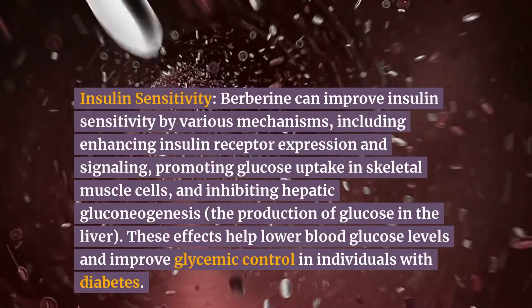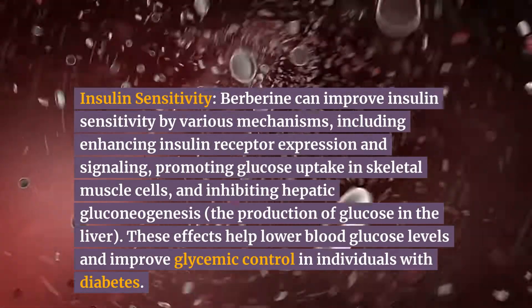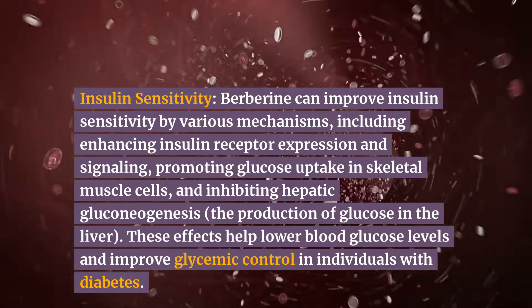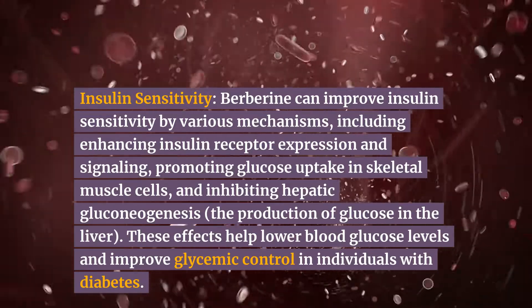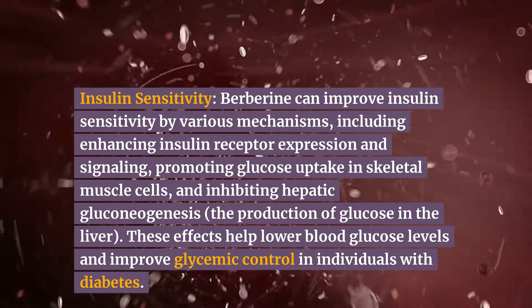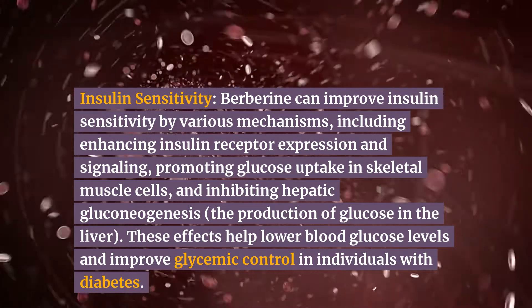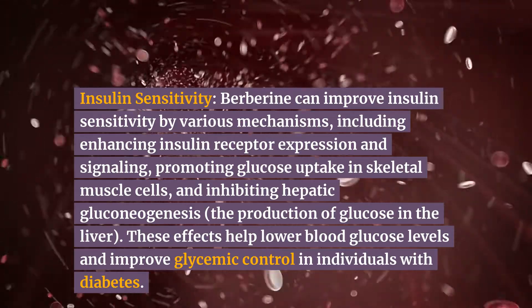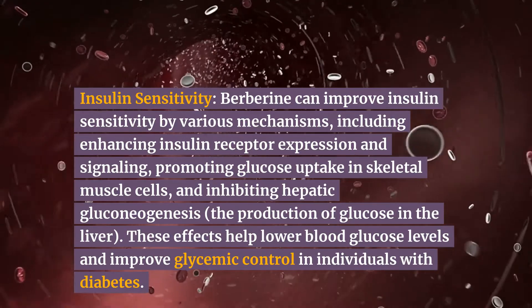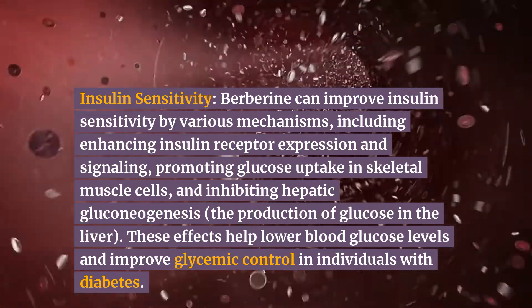Insulin Sensitivity: Berberine can improve insulin sensitivity by various mechanisms, including enhancing insulin receptor expression and signaling, promoting glucose uptake in skeletal muscle cells, and inhibiting hepatic gluconeogenesis — the production of glucose in the liver. These effects help lower blood glucose levels and improve glycemic control in individuals with diabetes.